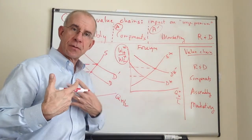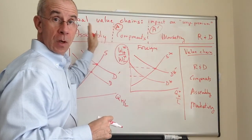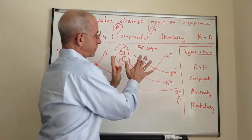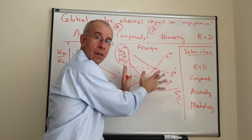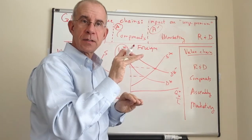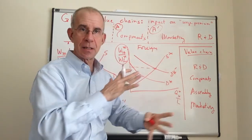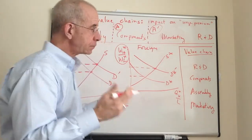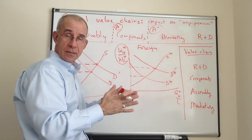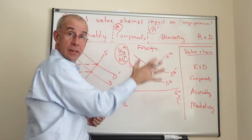So when countries can transfer tasks across borders in an environment where different activities require different levels of skill, the change in demand in the foreign country — the relatively low-wage country — will increase the wage premium there, and also increase the wage premium in the home country because of these changes in where activities take place. In short, when we think about these things in the context of global value chains and trade in tasks, we can see this expansion of income inequality across countries as activities move from one country to another.